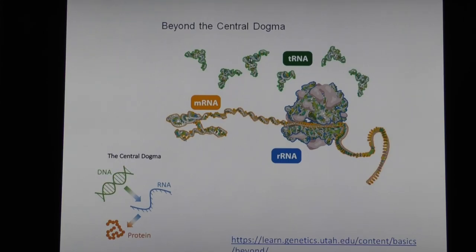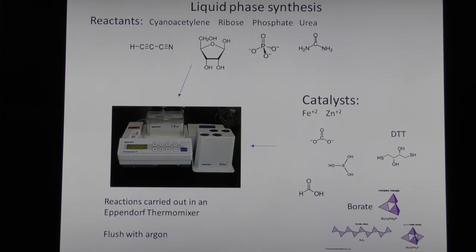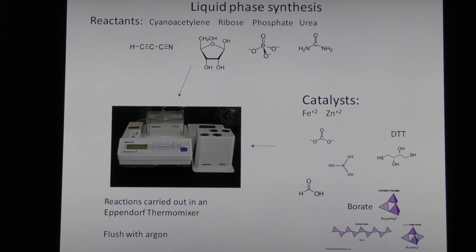The central dogma is: DNA makes RNA makes protein. Some people say at the beginning it didn't work that way — there was something simpler, because DNA is much more difficult. In Carroll's experiment, he takes a key chemical, cyanoacetylene — a cyanide and acetylene hooked together — because this is formed in gas phase reactions and settles into the ocean. You can find this chemical on Titan, a moon of Saturn, and in carbonaceous meteorites. He puts in ribose, a source of phosphate mineral, and urea.